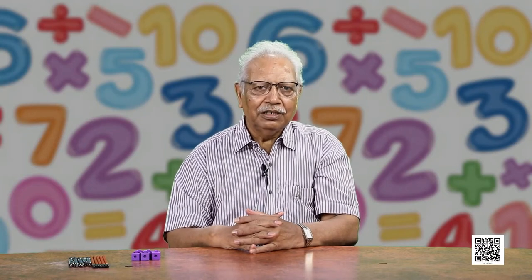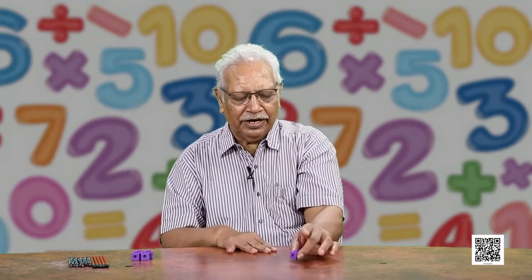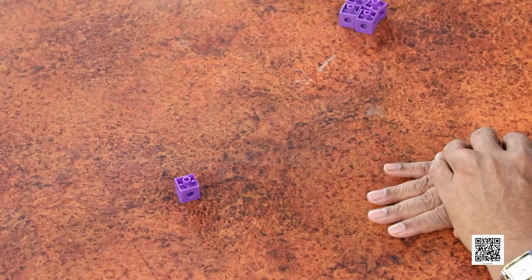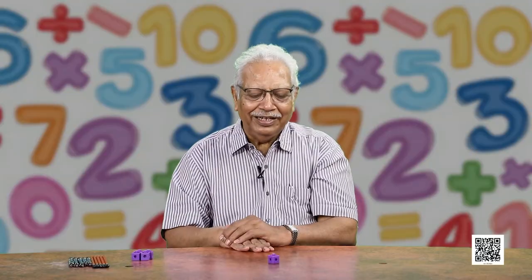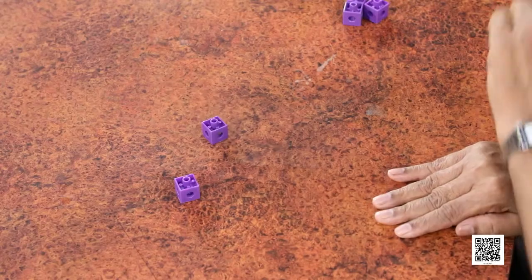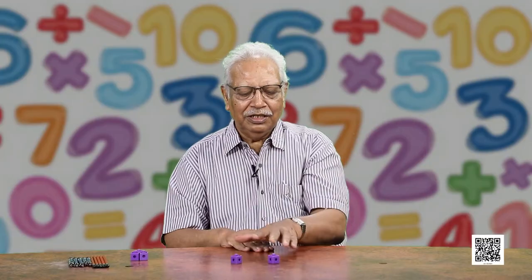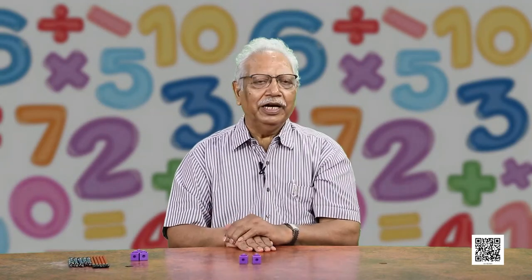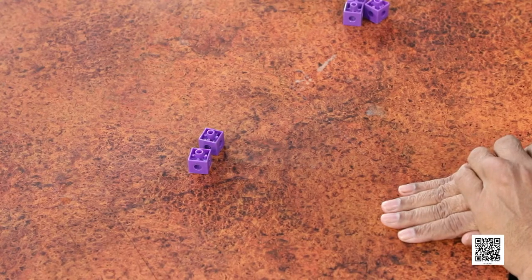Let us start and we can take any small object here. For example, how many of these plastic cubes? One and one more plastic cube. Now, how many are these? You will say one and this one make 2. They add to make 2.